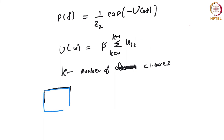Let us say a 3×3 neighborhood. If there is a strong edge going through here with different pixel values, and this is the center pixel, the edge will have a considerably different value than the center pixel. So U will be lower.